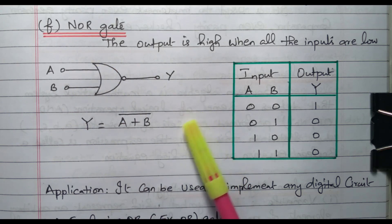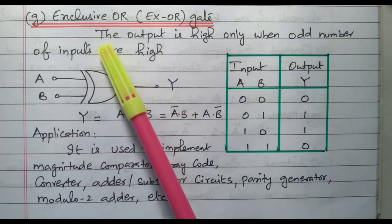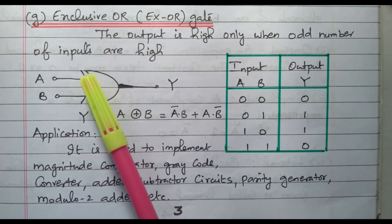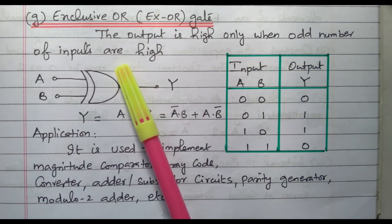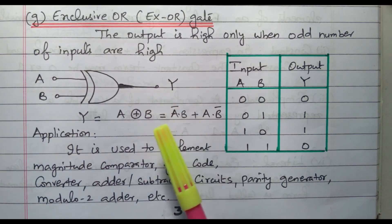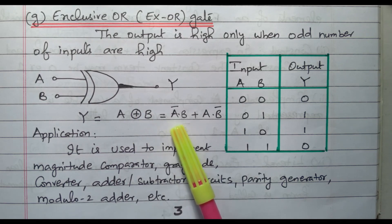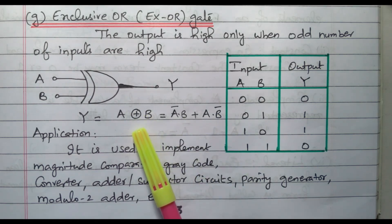Now we will go to the special type of gate: exclusive OR gate, XOR gate. The XOR gate symbol is like the OR gate symbol with one more line drawn — this extra line indicates the XOR gate. The output is high only when an odd number of inputs are high, that is 1, 3, 5, and so on. The expression is Y = A⊕B = Ā·B + A·B̄.